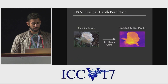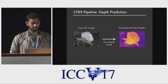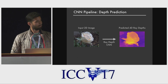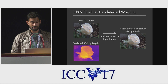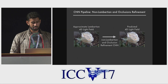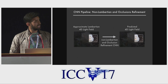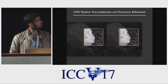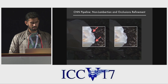We model the function to predict a local light field from a single image as a convolutional neural network pipeline. First, we use a network to predict a depth map for each view in the light field. We then backwards warp the input image by the predicted depths to render a Lambertian approximation of each view in the light field. We use a final network to refine this light field to predict non-Lambertian effects and occluded rays. Zooming into this example here, we can see that the refinement network is cleaning up small artifacts caused by depth-based warping.